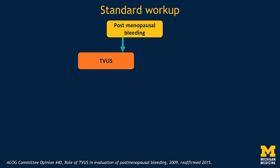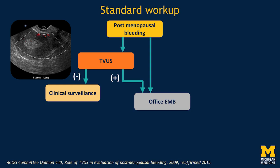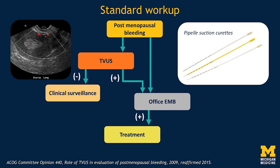What's the standard workup for postmenopausal bleeding? Many of these women go to transvaginal ultrasound. If that ultrasound is negative or normal, the patient goes on to clinical surveillance. If it's positive, meaning there's an abnormal appearance of the endometrial stripe, the patient will go on to office endometrial biopsy. Sometimes clinicians elect to go directly from bleeding symptoms to endometrial biopsy without the intervening ultrasound. The endometrial biopsy is performed in the office with flexible pipel suction curettes — a very low-risk procedure that doesn't require dilation and is rarely associated with bleeding, pain, or uterine perforation. It's a simple and accurate way to get a diagnosis of endometrial carcinoma, hyperplasia, or anything else that might be going on.